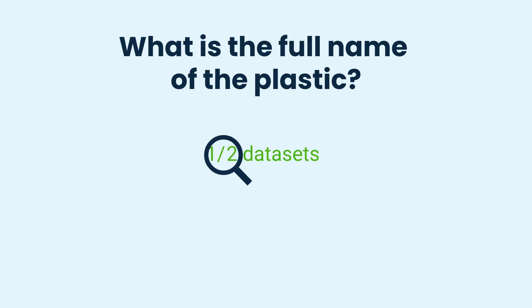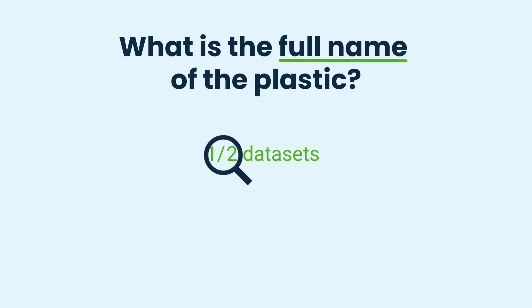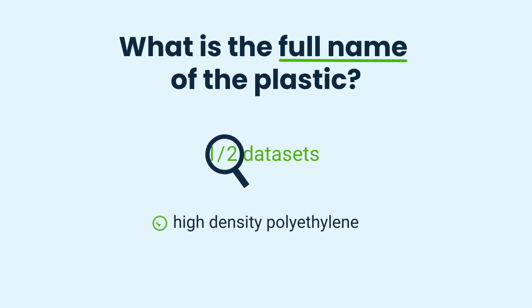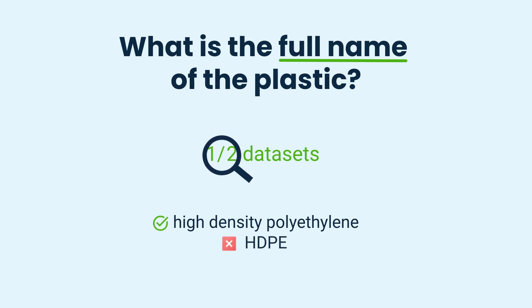Plastics often have abbreviations, but in EcoInvent they are listed by their full names. For example, search for high density polyethylene instead of HDPE. If you're unsure about the full name, you can search online.